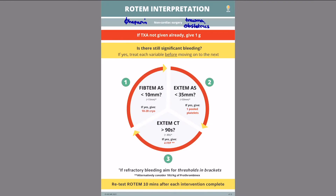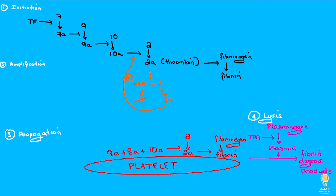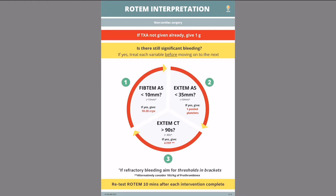What else does this aid assume? The first assumption this cognitive aid makes is that the patient is bleeding. This is important because, as always, we treat the patient and not the number. As you can see, our cognitive aid also suggests a role for the empiric administration of tranexamic acid in the bleeding patient. This will be a suitable, low-risk adjunct in most of our bleeding patients, helping to ensure we are treating a potentially hyperfibrinolytic system early on. Guidelines would also recommend supplementing the bolus dose of 1g of TXA with an infusion of 1g over 8 hours.